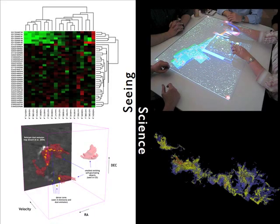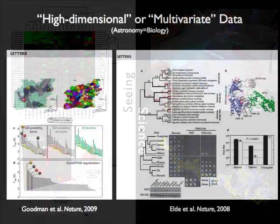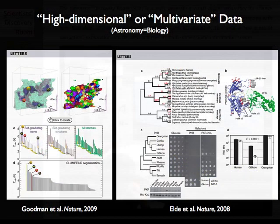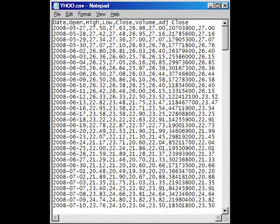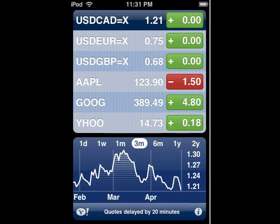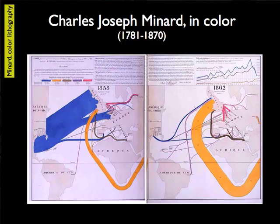I'm Alyssa Goodman, and the name of the course is The Art of Numbers. This course is about how we can display quantitative information in ways that the human brain is better at understanding than just tables of numbers or long formulas. And those ways usually look like pictures — we usually call them things like maps and charts and graphs.